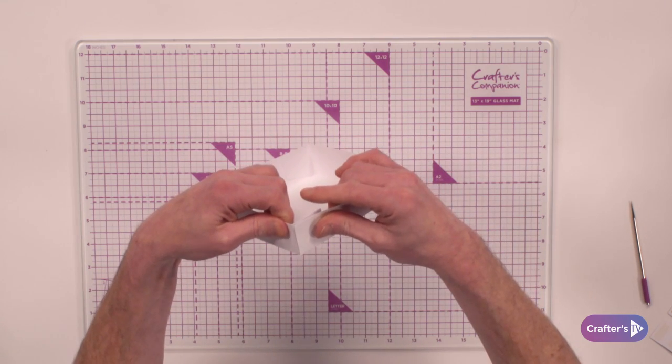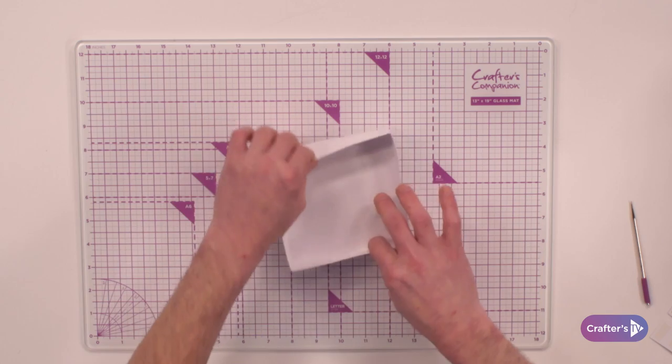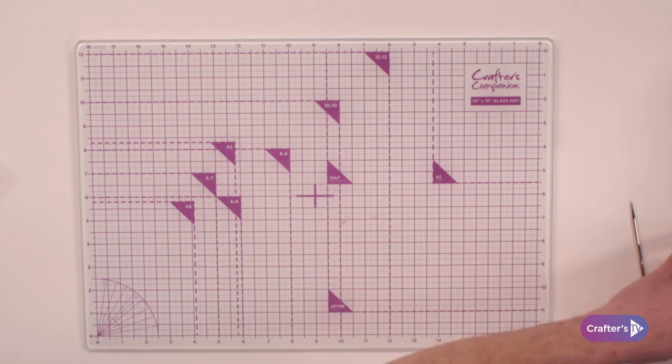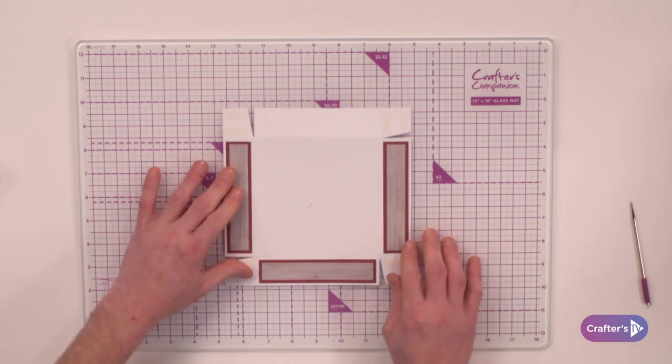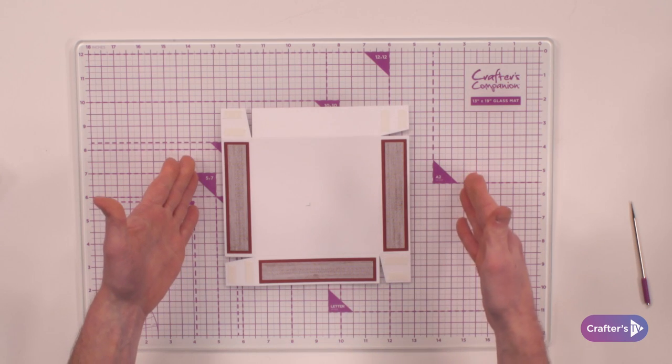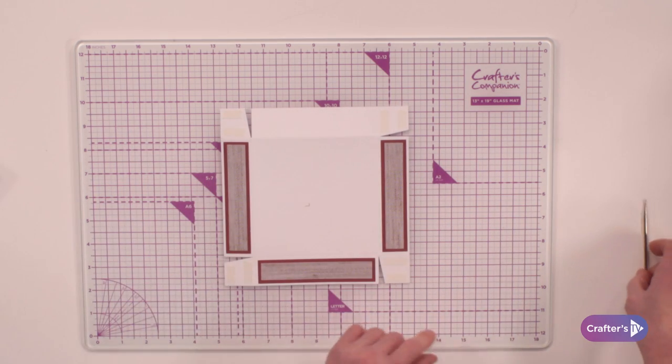Then what we can do is before we assemble the lid of the box, I'm going to bring the lid in. Now I've done the same, seven and a half by seven and a half, and I've scored it one and a quarter on the lid side.